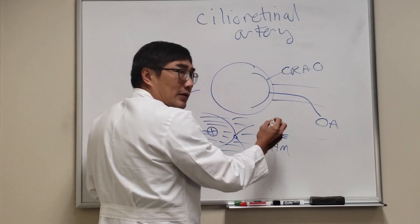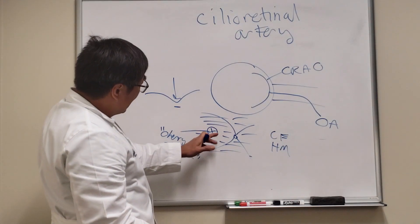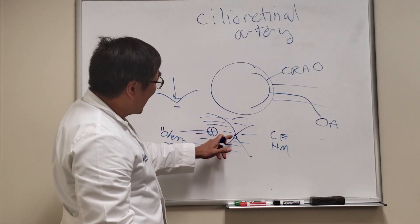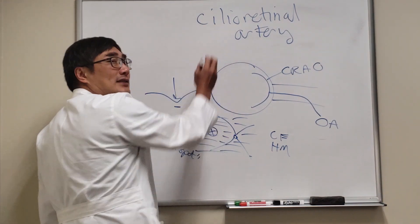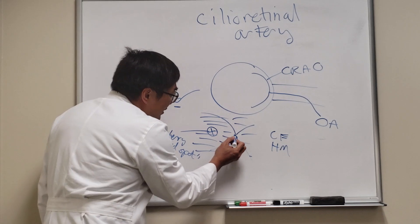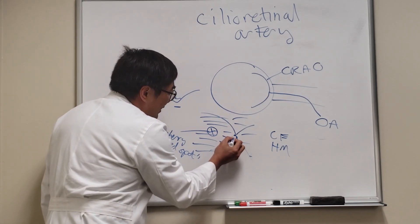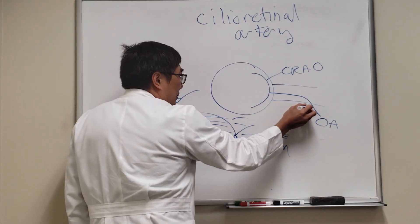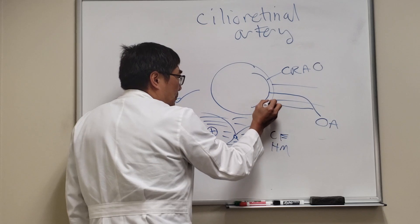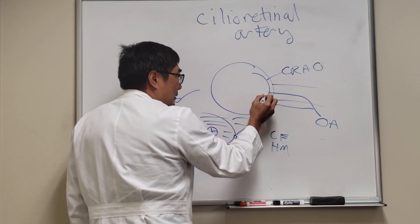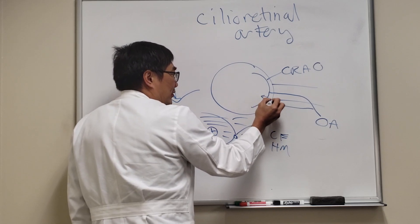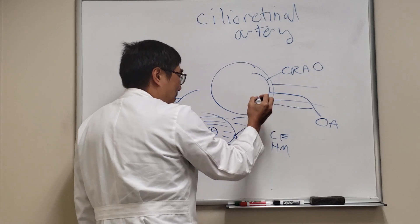Sometimes people have a cilioretinal artery, and that's the thing that saves them. The cilioretinal artery actually comes from the ophthalmic artery, but it's like a posterior ciliary branch that comes out through the nerve head and supplies a piece of the retina.